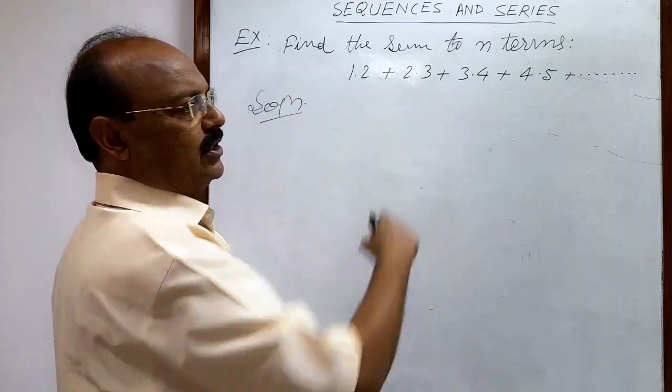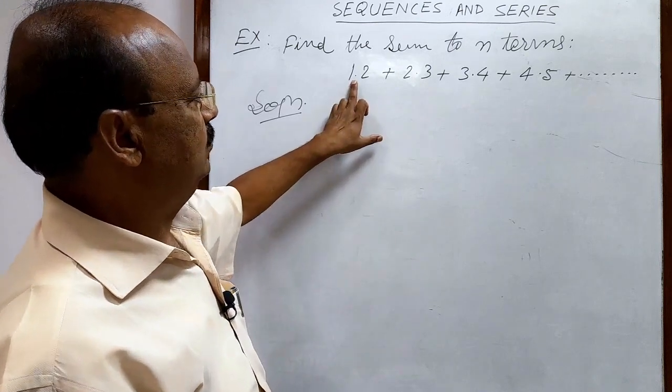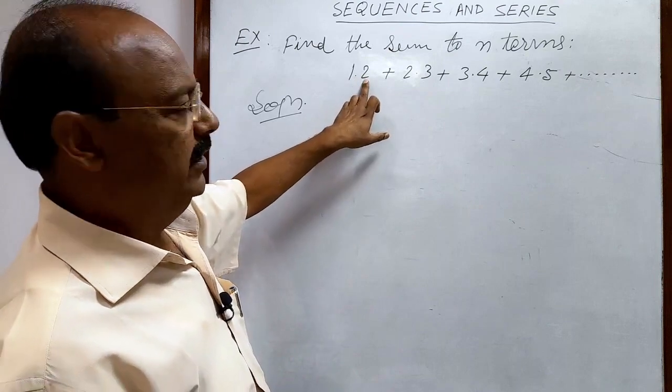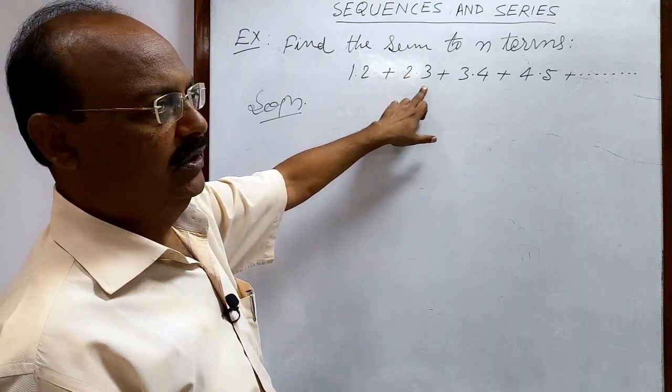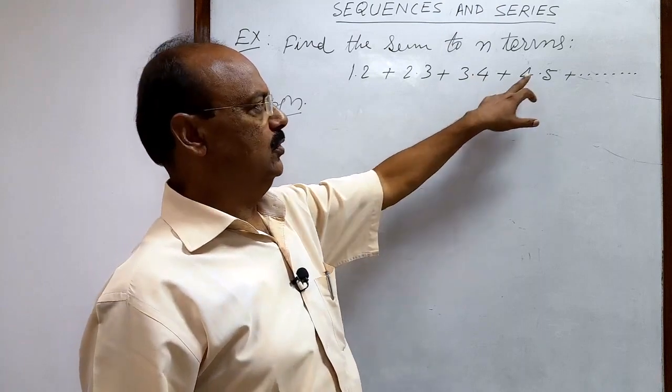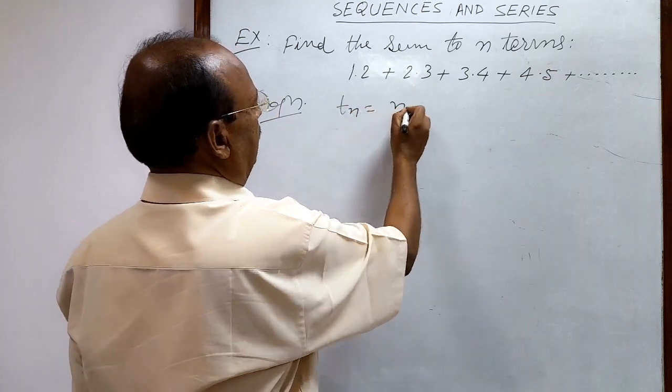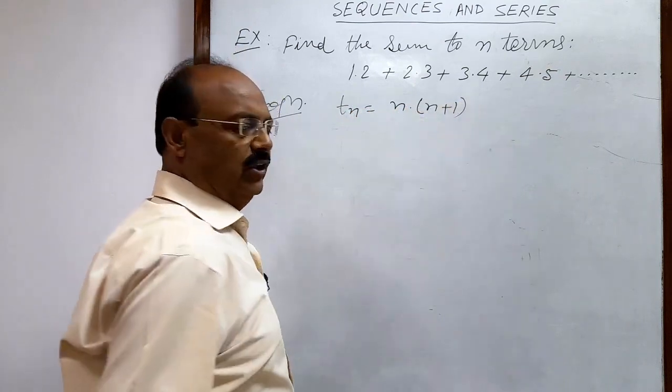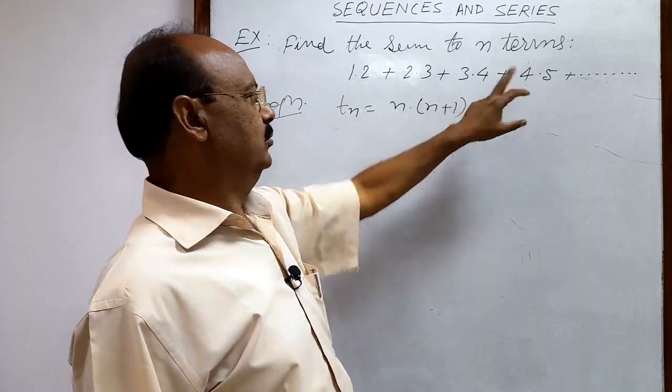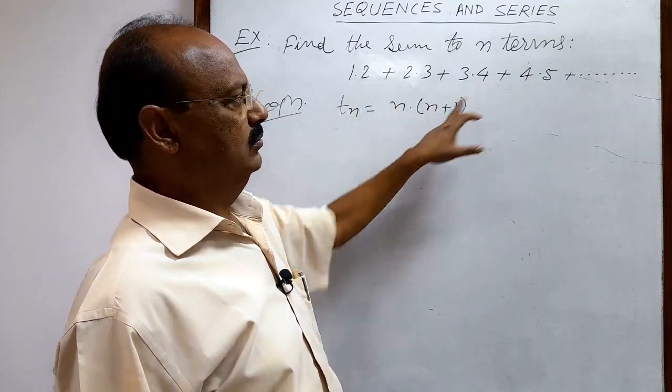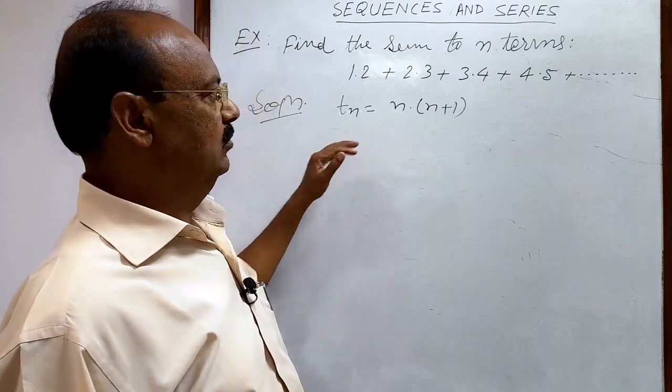First of all, you have to understand the nth term of the given series. This is the first term: 1 and the next number 2. Similarly, this is the second term: 2, 2+1. This is the third term: 3, 3+1. This is the fourth term: 4, 4+1. So clearly, the nth term Tn will be n(n+1). You can check by putting any particular value. Suppose you want to find the fourth term; if you put n=4, you get 4×5. Correct.